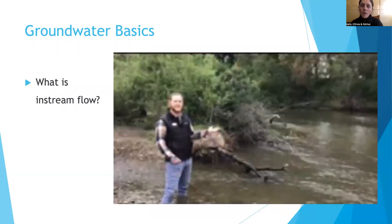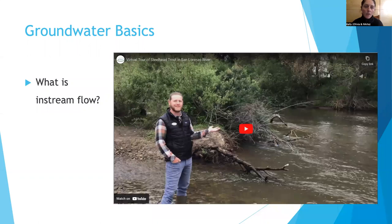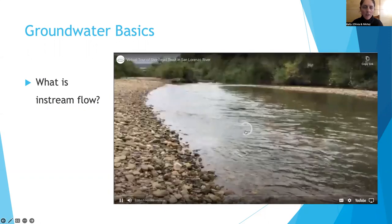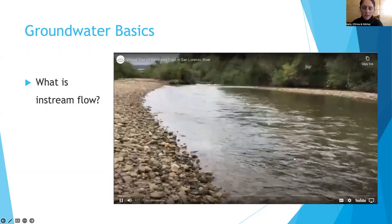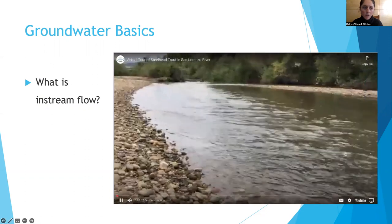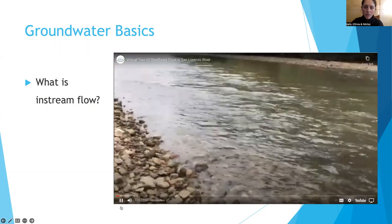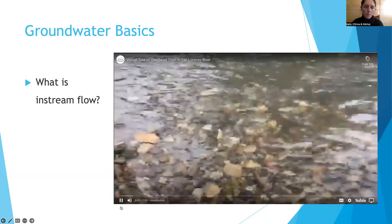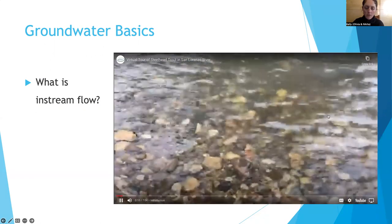So what is in-stream flow? We can get in-stream flow in multiple ways, like runoff from rain that flows over land surfaces or through interactions with groundwater. Here's an example of water flowing in a river channel — the water going through the channel is your in-stream flow.